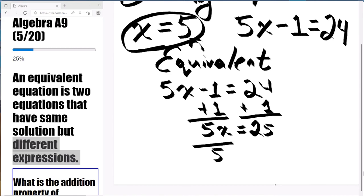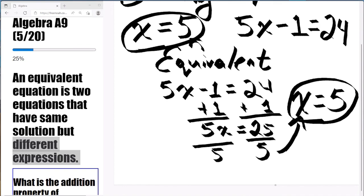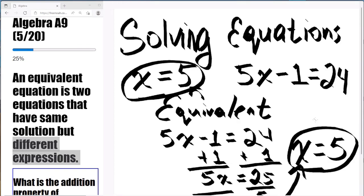We're going to add one on each side, giving us an isolated 5x equals 25. Divide everything by 5, leaving x alone, and now we have x equals 5.